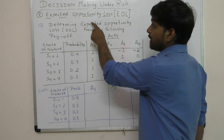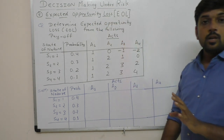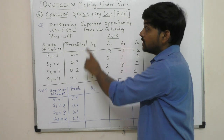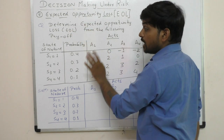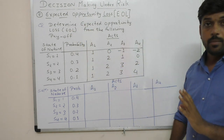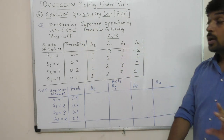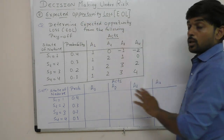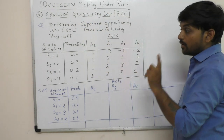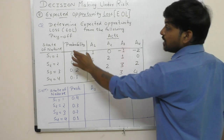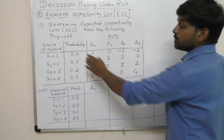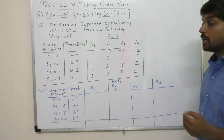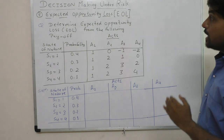Now, since we have the expected opportunity loss, how will we find it? We multiply by the probability. When the expected value is computed, we multiply each regret value by its corresponding probability, and then sum them. So EOL equals the sum of regret multiplied by the corresponding probability for each state of nature.